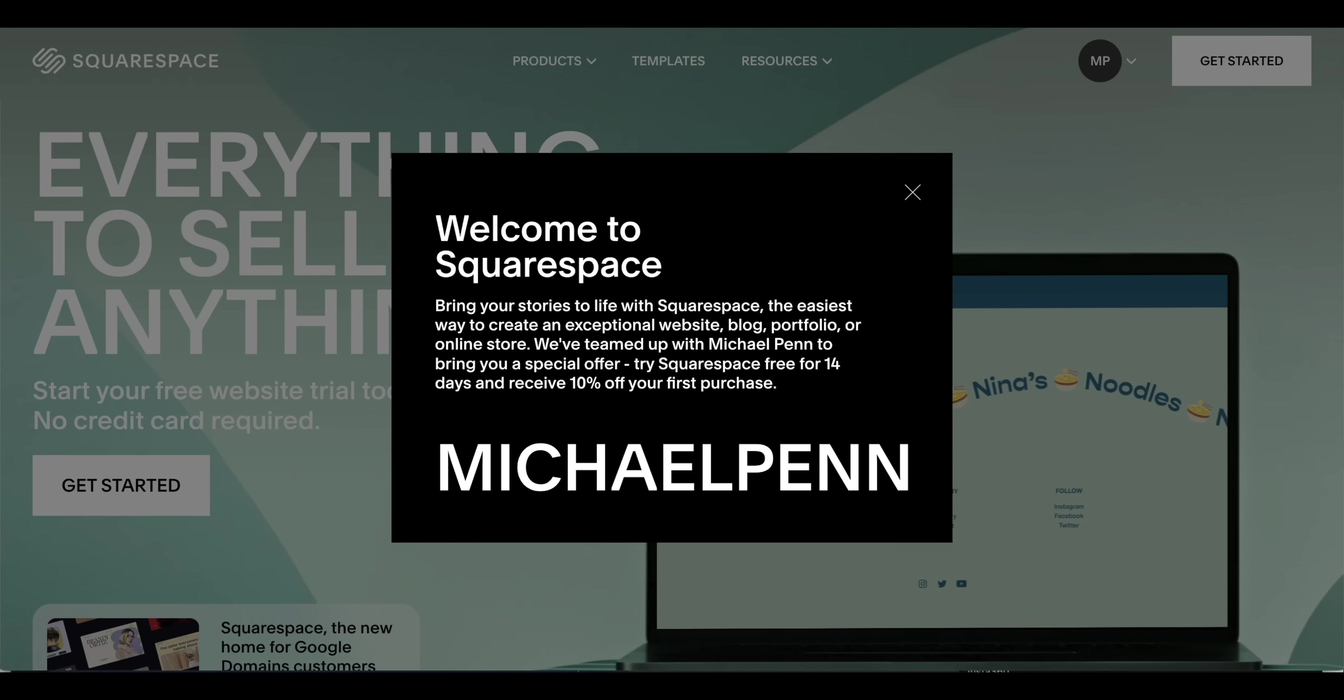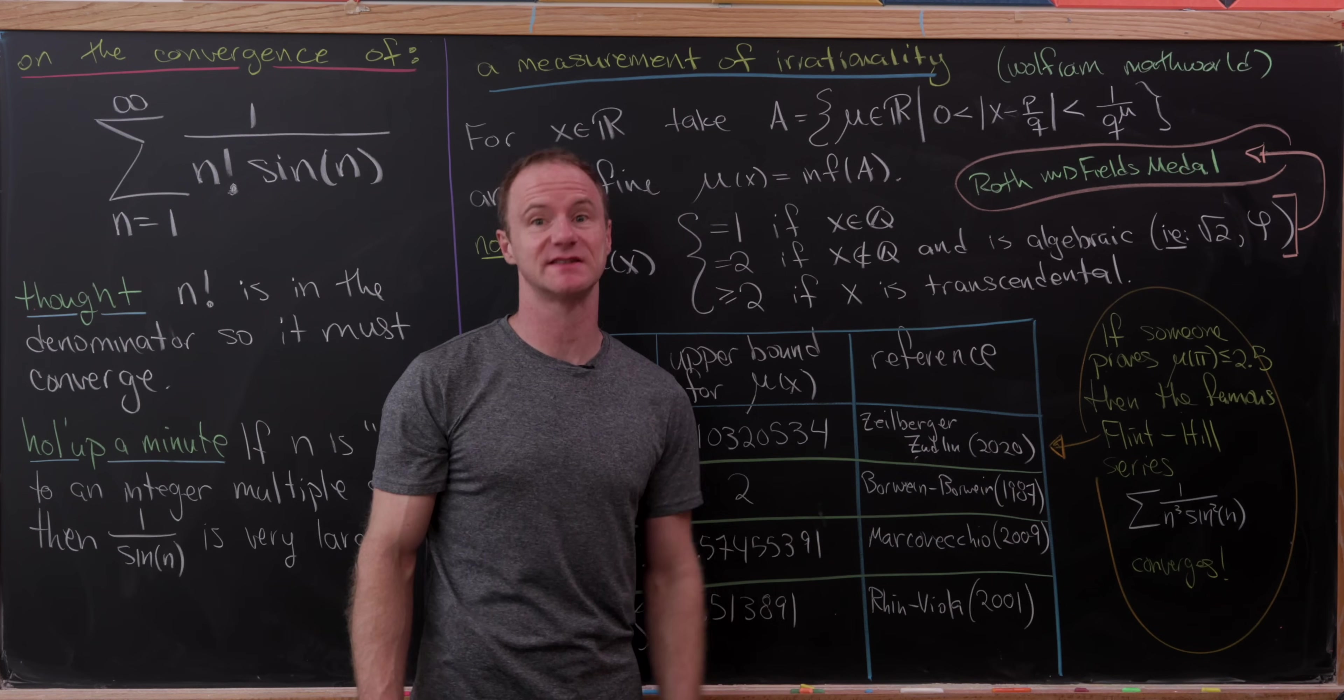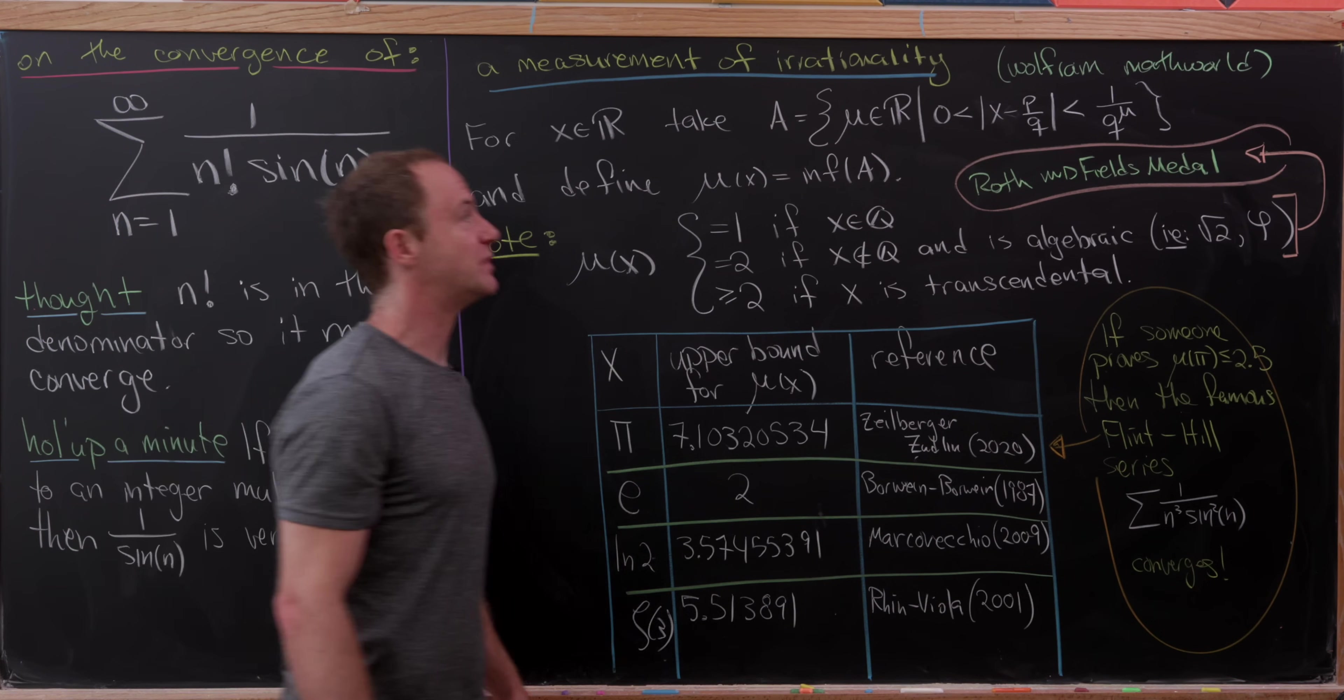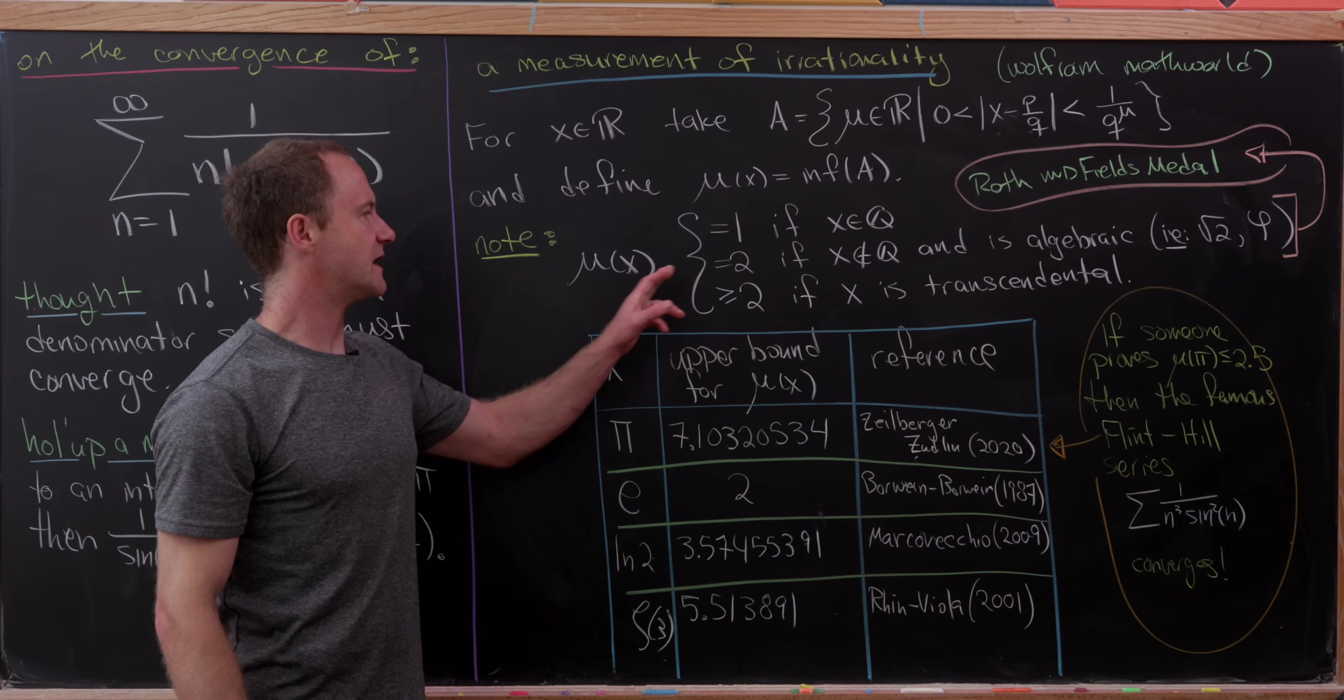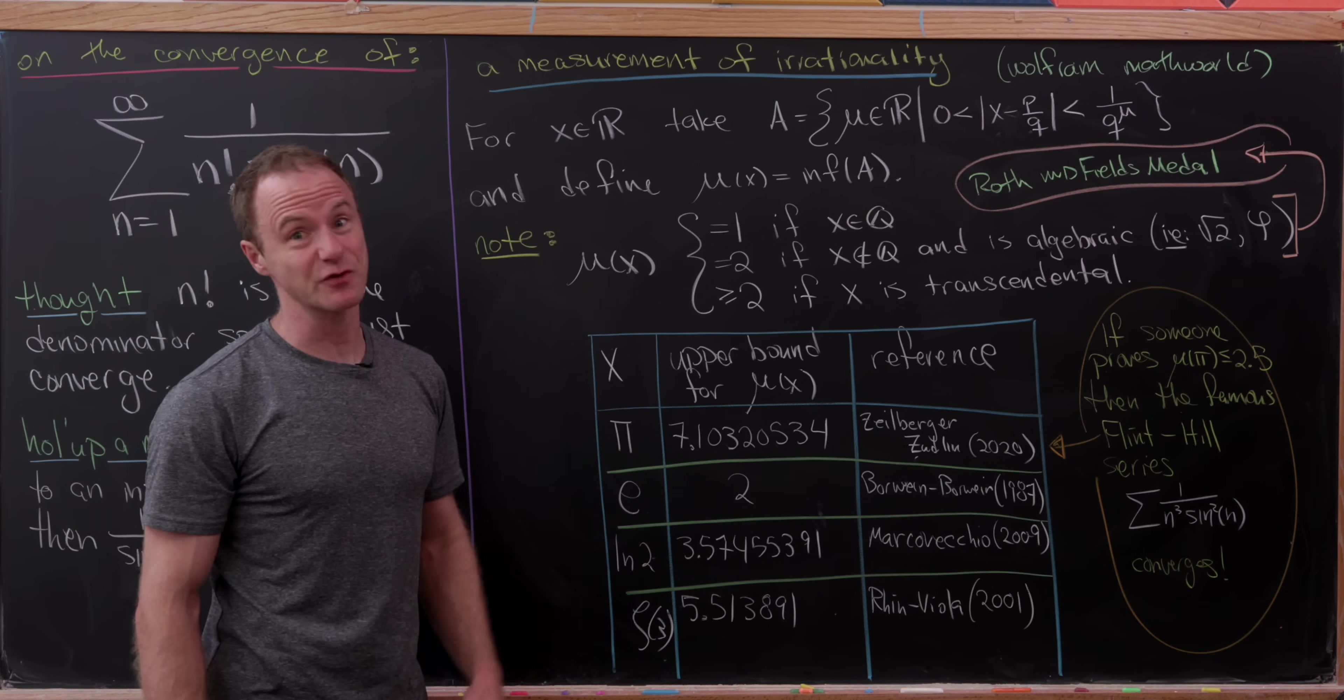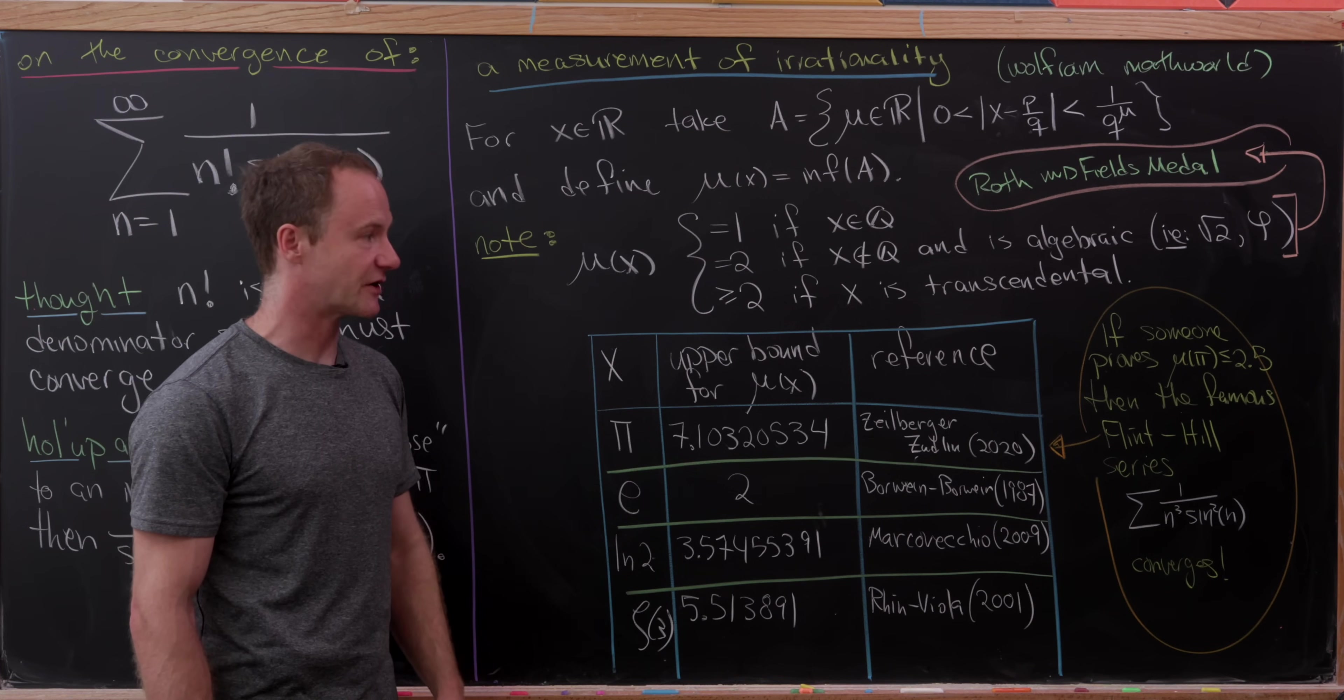Let's look at the irrationality measure for some well-known irrational numbers. Mu of x equals 1 if x is rational, and equals 2 if we have an irrational algebraic number, like the square root of 2 or the golden ratio phi. This was actually really hard—Roth earned the Fields Medal for this proof. If x is transcendental, then mu of x is greater than or equal to 2.